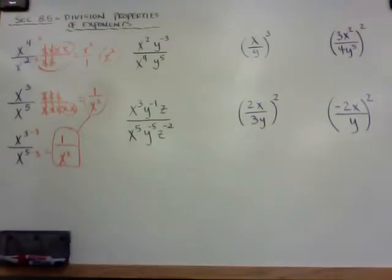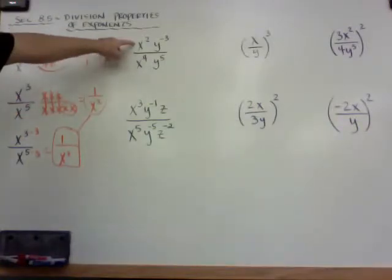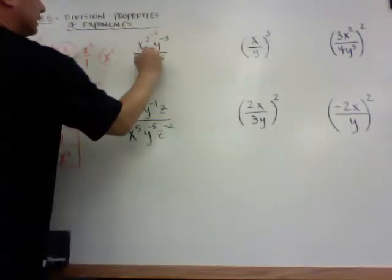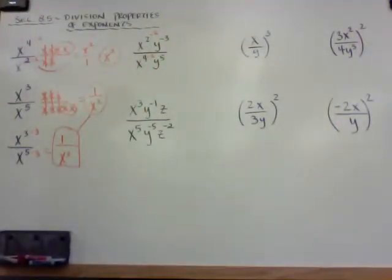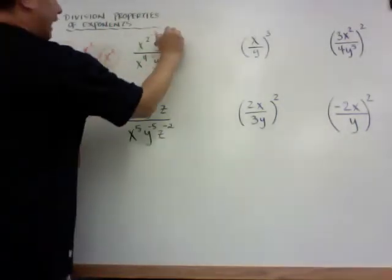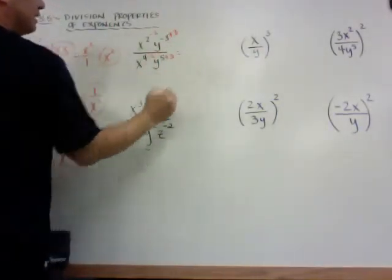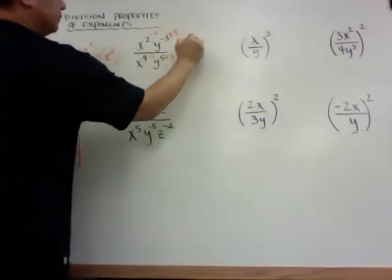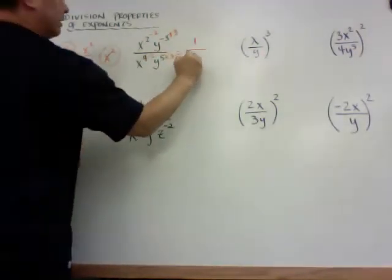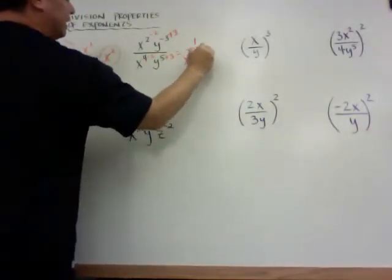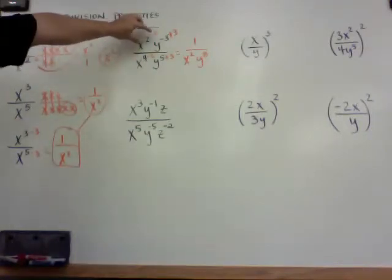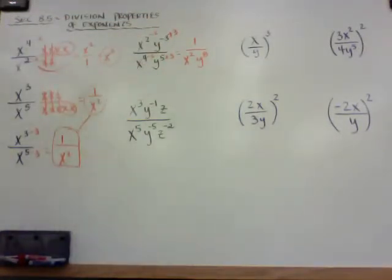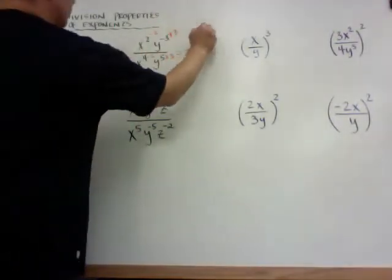Now I'll show you what happens when we deal with negative numbers. In this case, I have x on top and bottom and y on the top and bottom, so I need to simplify. If I have x squared on the top and x to the 4th on the bottom, I want to zero out the top number because it's smaller, so I'm going to minus 2 from both. And if I have y to the negative 3 and y to the 5 on the bottom, to zero out one of the exponents, I can add 3 to both. So the top becomes x to the 0, y to the 0, which is 1. On the bottom, x to the 4 minus 2 is x squared, and y to the 5 plus 3 is y to the 8th. Another way of thinking about it: y to the negative 3, if moved down to the bottom, adds 3 to the 5. So the answer is 1 over x squared y to the 8th.